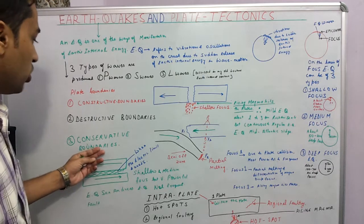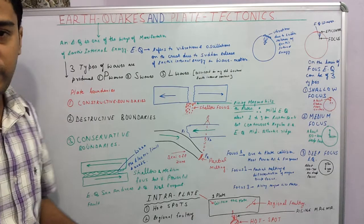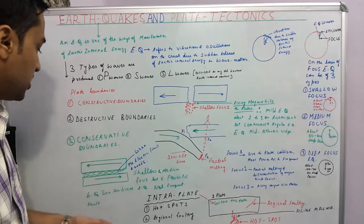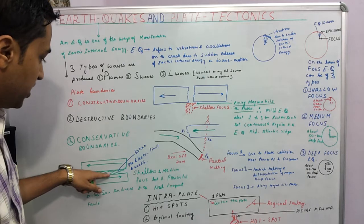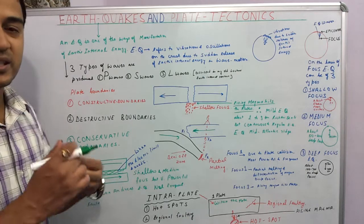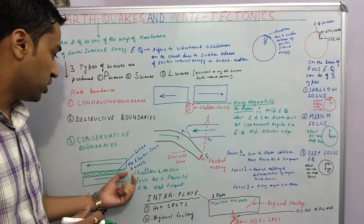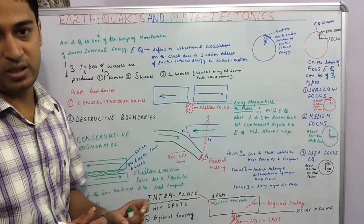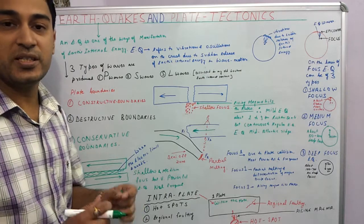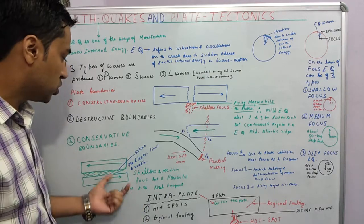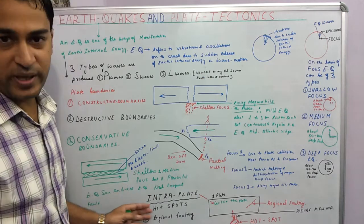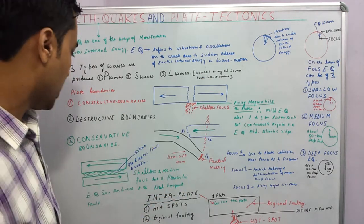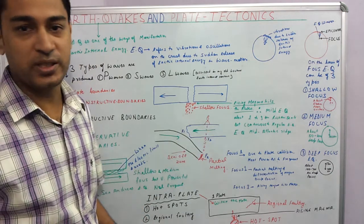Now we will come to the conservative plate boundaries. The conservative plate boundaries are those where two plates move away from each other but parallel to each other. They do not hit against each other, but in between the plates there is friction and there is interlocking of the rocks. And due to this interlocking, the rocks get jammed. But when the elastic limit of the rocks is exceeded, there is a very sudden release of energy, so very strong earthquakes are released. Here the earthquakes can be shallow focused or medium focused. A good example of it would be the San Andreas fault in California.